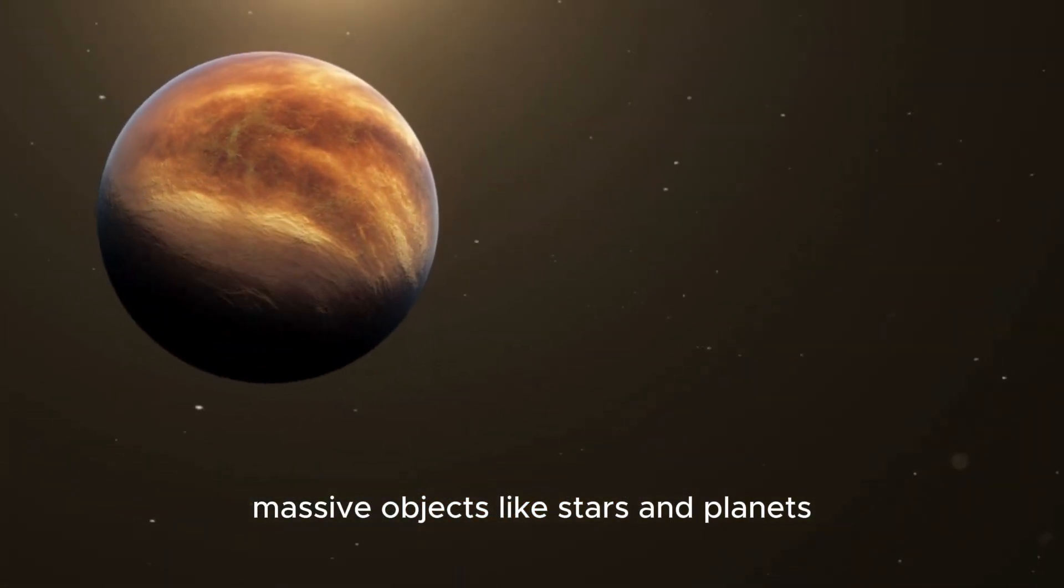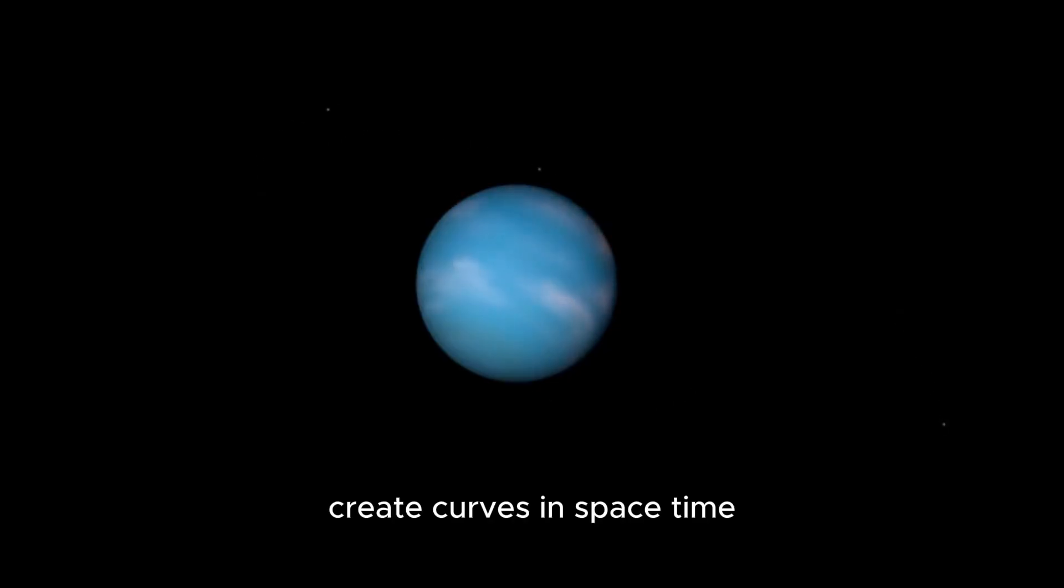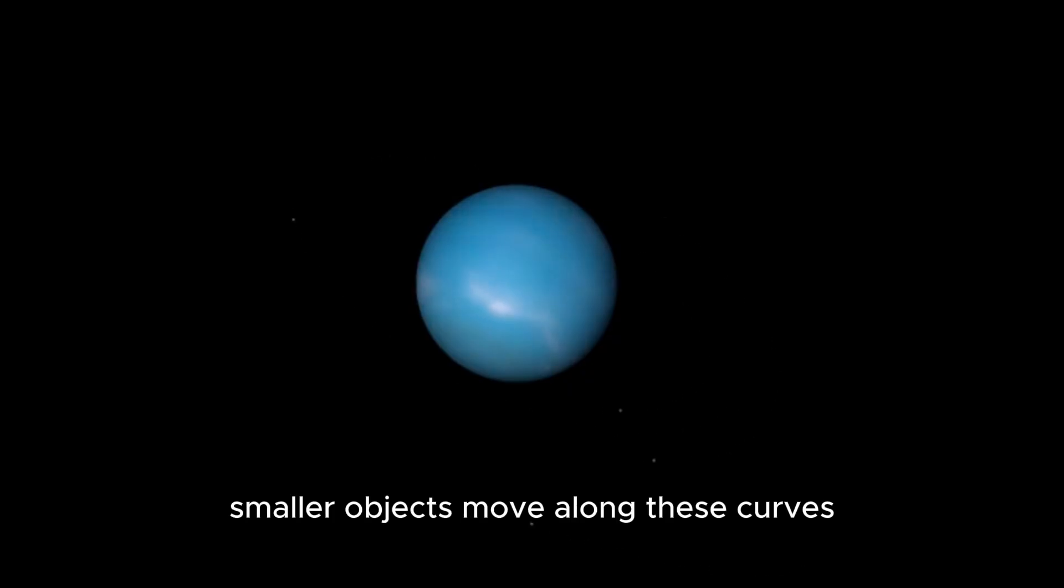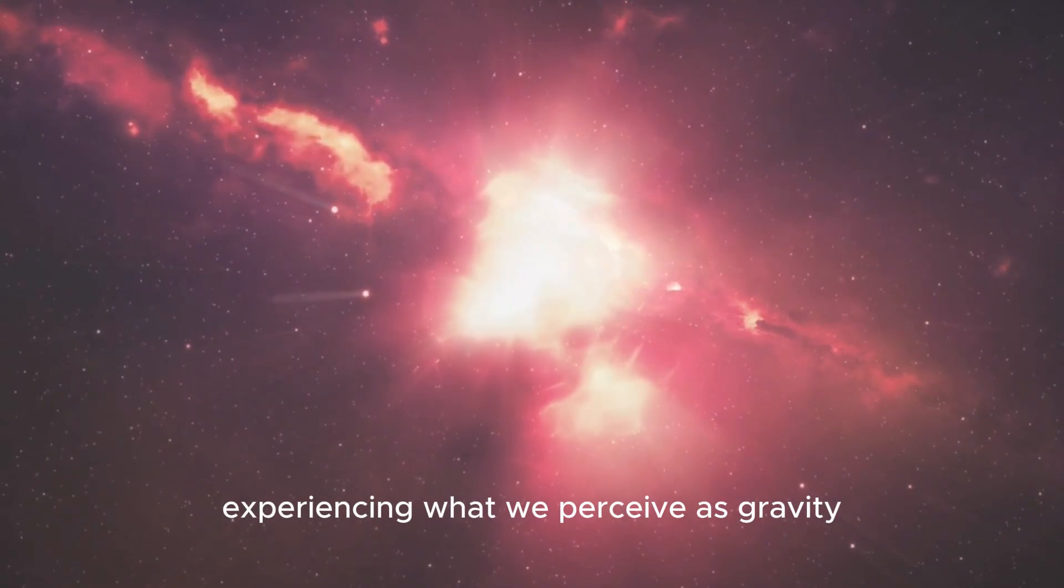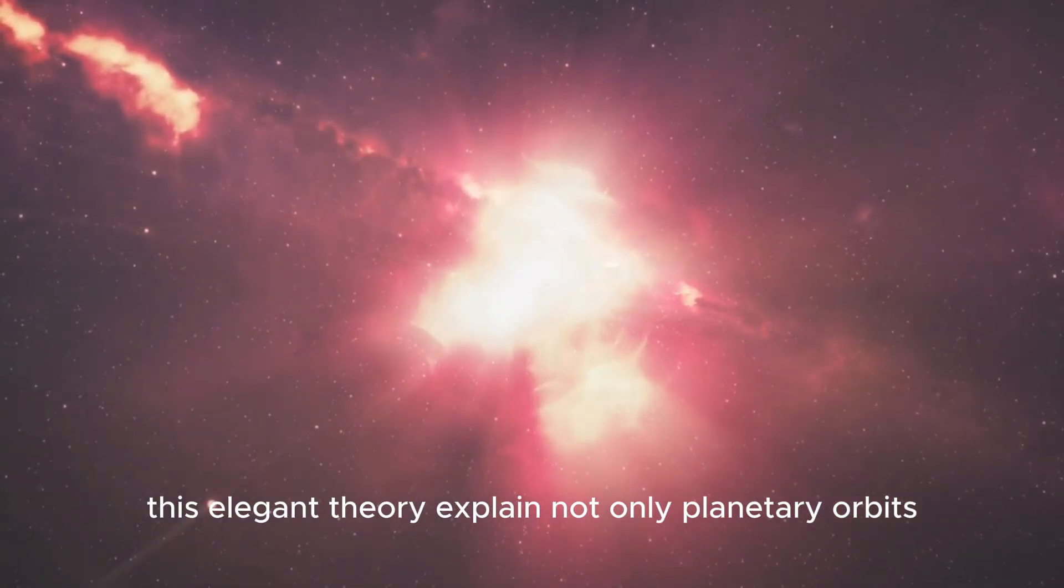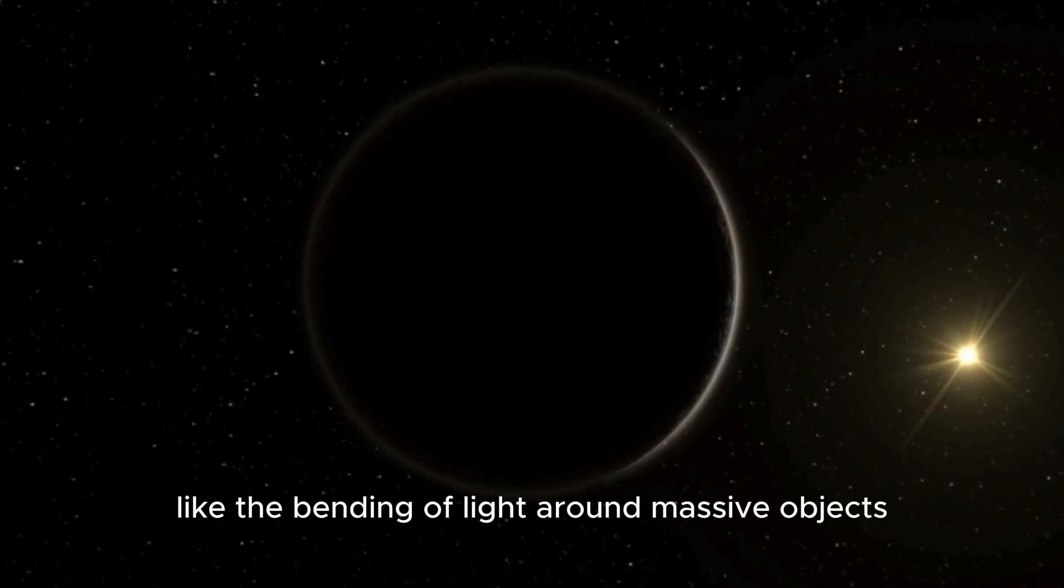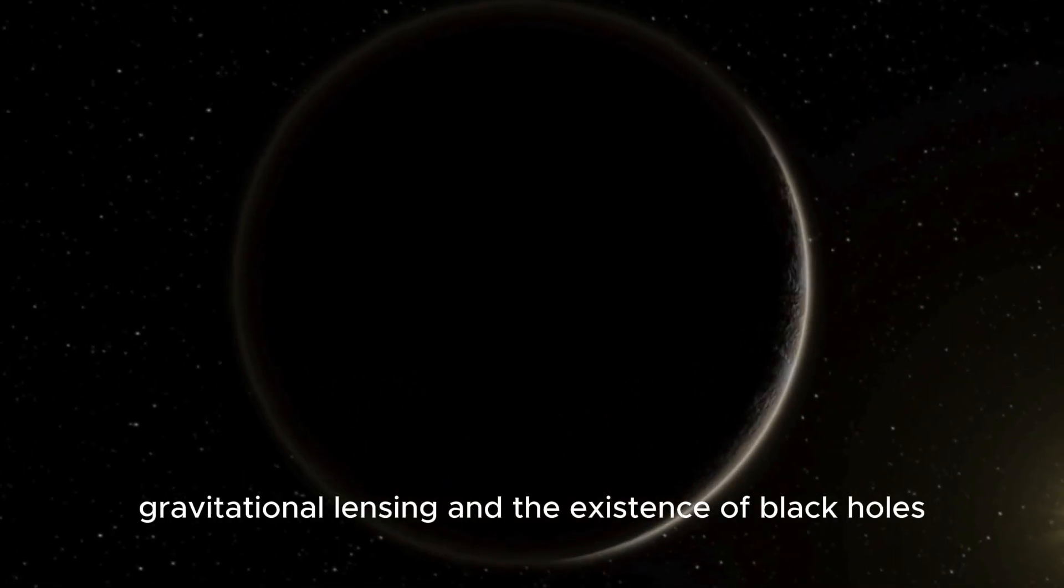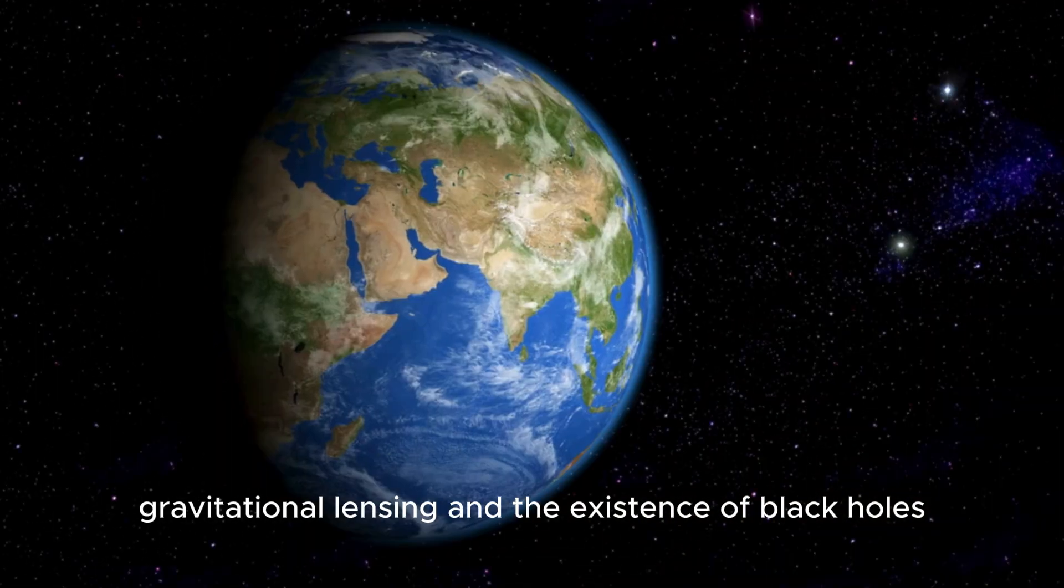Massive objects like stars and planets create curves in spacetime, much like a heavy ball placed on a trampoline. Smaller objects move along these curves, experiencing what we perceive as gravity. This elegant theory explained not only planetary orbits but also phenomena like the bending of light around massive objects, gravitational lensing, and the existence of black holes.